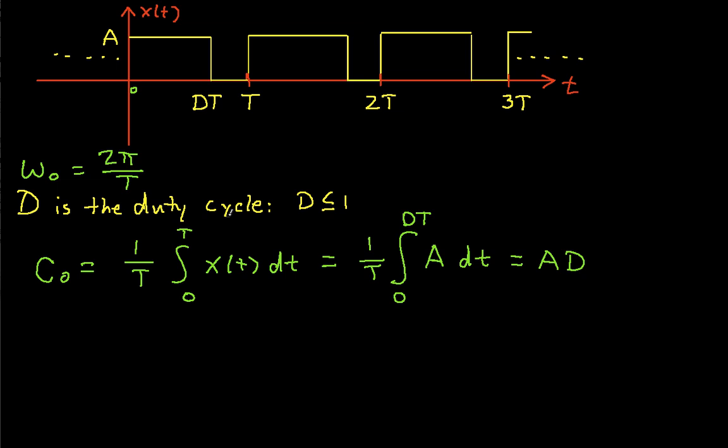We'll need that in just a minute when we compute C sub k. So there's C0. This is the average value of the waveform averaged over one period. Let's go ahead and do C sub k, where k is not equal to 0.